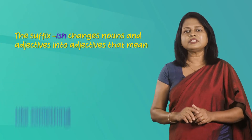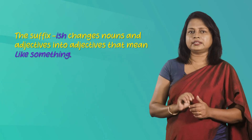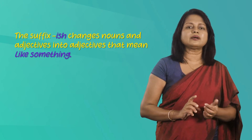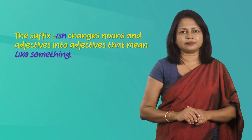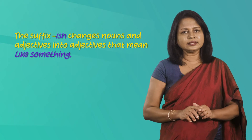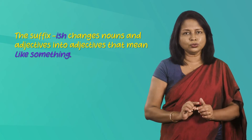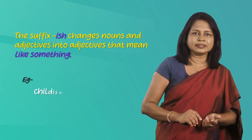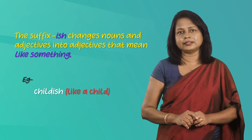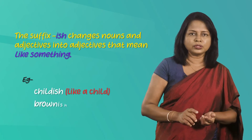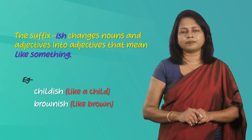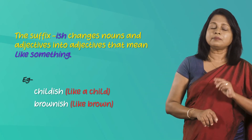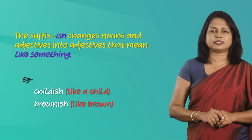This is the suffix '-ish'. When it is added, certain nouns become adjectives. You can also add '-ish' to an adjective to form a new adjective. For example, 'childish' means like a child, and 'brownish' means like brown.